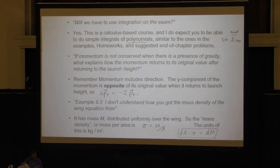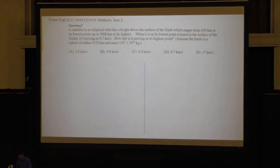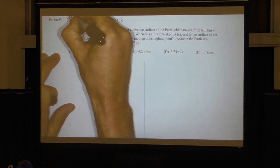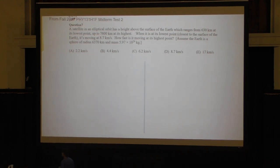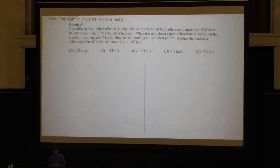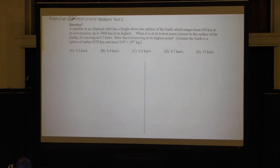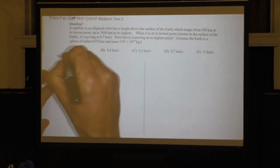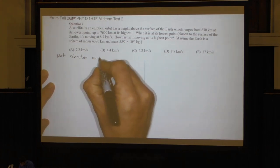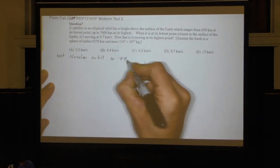I want to do an example from Chapter 8 — a midterm problem from fall 2015. A satellite in an elliptical orbit has a height above the surface ranging from 630 kilometers at its lowest point up to 7600 kilometers at its highest. When it is at its lowest point, it's moving at 8.7 kilometers per second. How fast is it moving at its highest point? The problem gives you the radius and mass of the Earth. The issue is this is not a circular orbit, so you can't use v equals the square root of G times r.